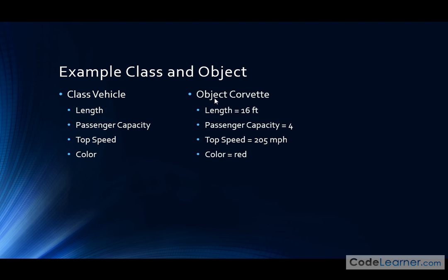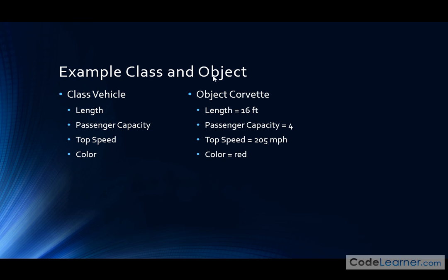I may create an object — notice I'm not saying it's a class anymore, I'm saying it's an object — and I'm going to call this object a Corvette. A Corvette is a very specific instance of a vehicle. We all know what a Corvette looks like: a really fast sports car. We know that the length is a certain specific number, the passenger capacity is a certain specific number, the top speed is a certain specific number, and the color of this specific Corvette is a certain specific color. Whatever you define in your class, which is a template, must be reflected when you create the object, because the object is created from the class.